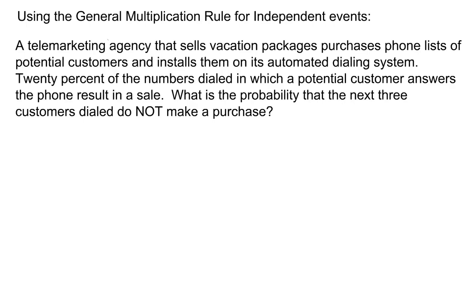In this example, we'll need to use the general multiplication rule for independent events. A telemarketing agency that sells vacation packages purchases phone lists of potential customers and installs them on its automated dialing system. 20% of the numbers dialed in which a potential customer answers the phone result in a sale. What is the probability that the next three customers dialed do not make a purchase?